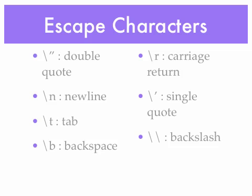There are additional escape characters. We've seen the double quotation mark. Backslash-N is the newline, taking the cursor to the next line. Backslash-T is the tab, moving the cursor over a number of spaces. Backslash-B is backspace, moving back one character or one space. Backslash-R is a carriage return, taking you back to the beginning of the line. Backslash with a single quote prints a single quote. And backslash-backslash prints a backslash.